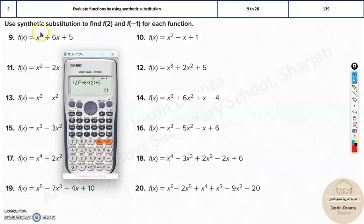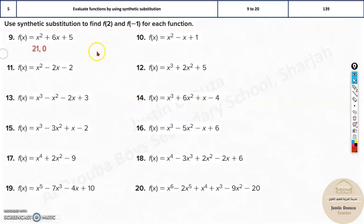But that is f of 2. What's the other answer you need to find for f of -1? So negative 1, that is over here minus 1, and over here it should be minus 1. And that's the answer, 21 and 0. Same way you can solve all these problems.